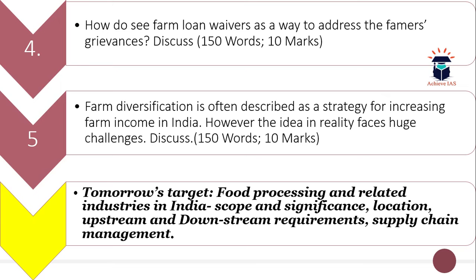The fifth question is: farm diversification is often described as a strategy for increasing farm income in India; however, the idea and reality face huge challenges — discuss. Here you have to focus on the challenges in the direction of farm diversification. The word limit is 150 and maximum marks are 10.